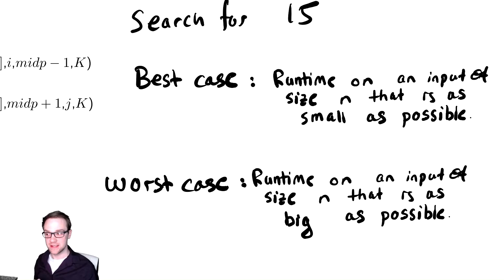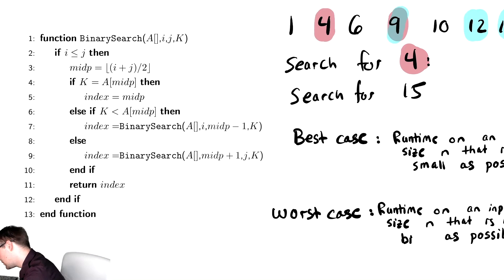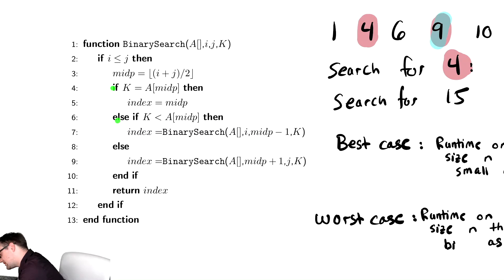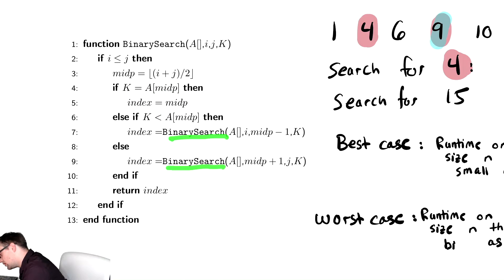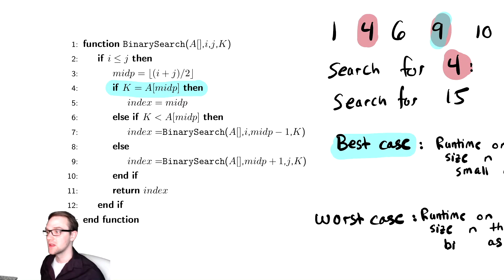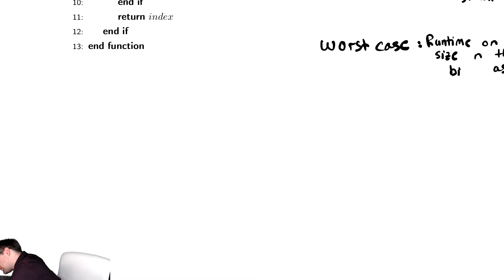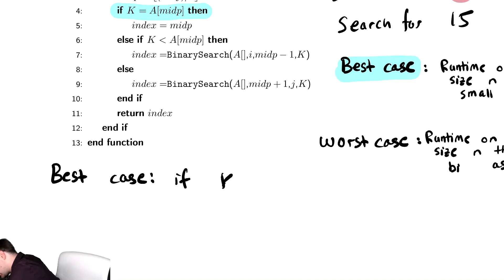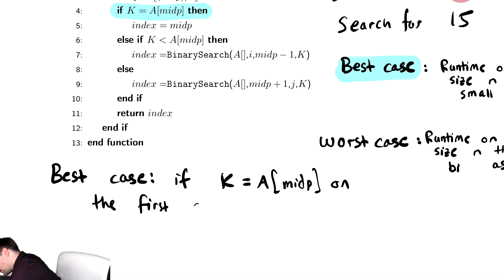Looking at the code, there are three things that happen: we have an if, an else if, and an else. In one of those cases we make no recursive call; in the other two we make a recursive call. So clearly the best case is the if statement — that is always the best case. The best case runtime is when k equals a at mid-p on the first call to the function.